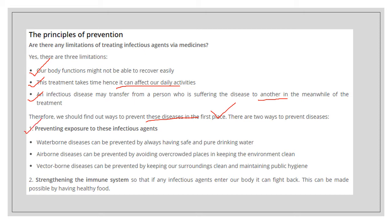The first approach is how do we prevent exposure to infectious agents. There are different kinds of diseases. First, waterborne disease — we can prevent it by having safe and pure drinking water. Second, airborne disease — it can be prevented by avoiding overcrowded places and keeping our surroundings clean. Third, vector-borne diseases — diseases carried by a third organism — can be prevented by keeping our surroundings clean and maintaining public hygiene.